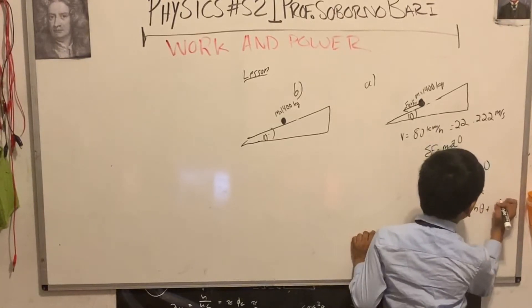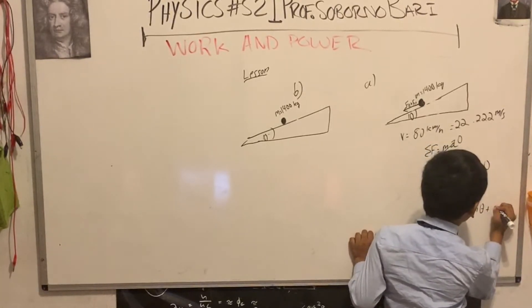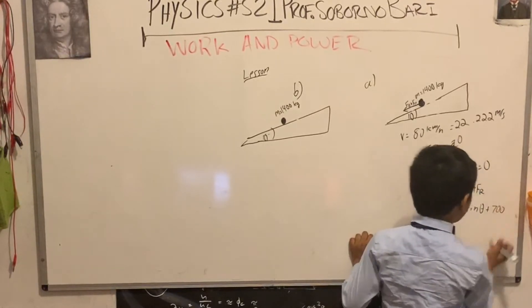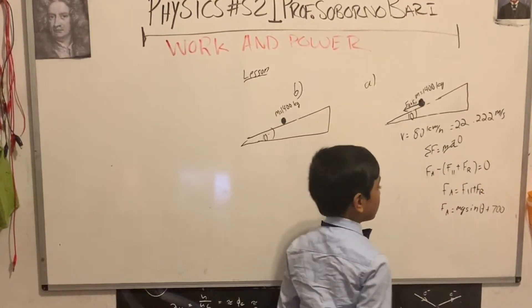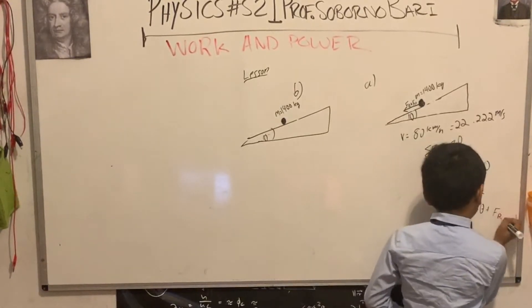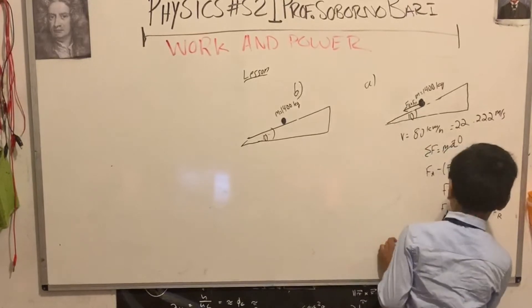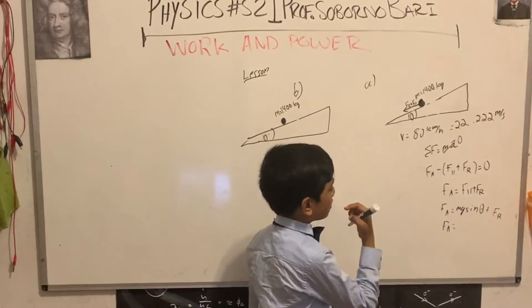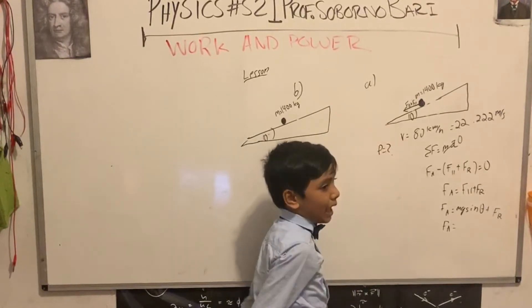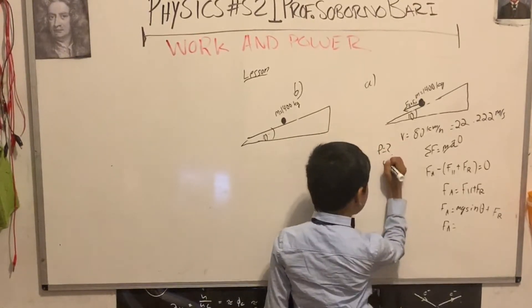F_A equals M g sine theta plus, F_R would be 700 in this case. So what would that be? Professor, what is the question? What are we looking for? In both cases, we're looking for the power needed in Watts, by the way.